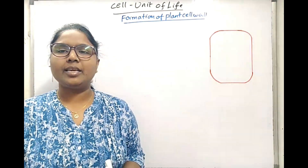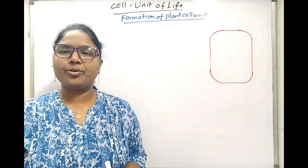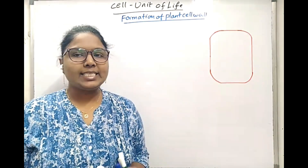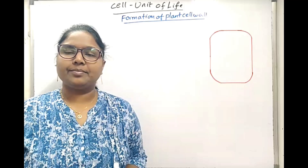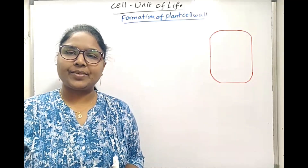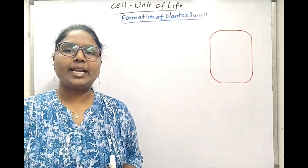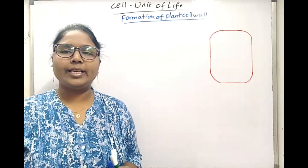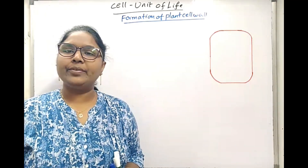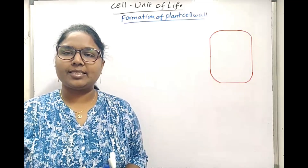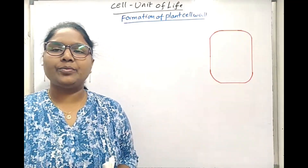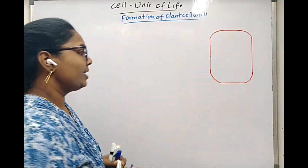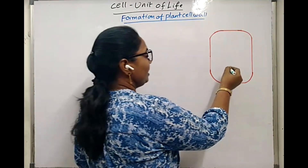Hello students. Now we will learn about formation of cell wall. During cytokinesis, some of the pieces from Golgi complex and endoplasmic reticulum accumulate between two daughter cells and get converted into a special structure called the cell plate.